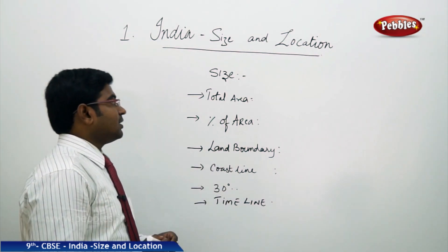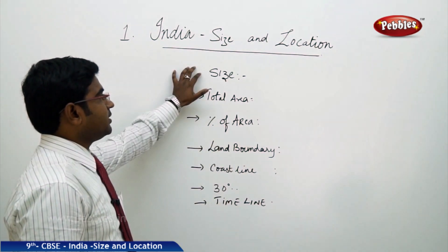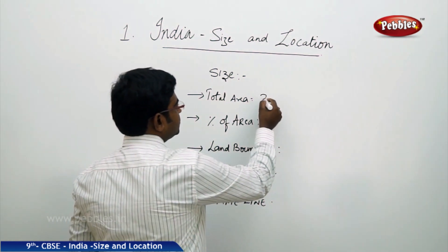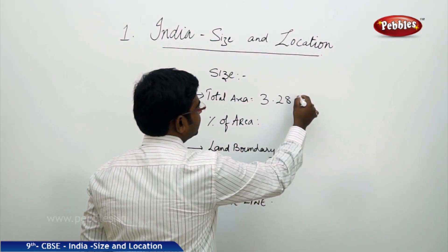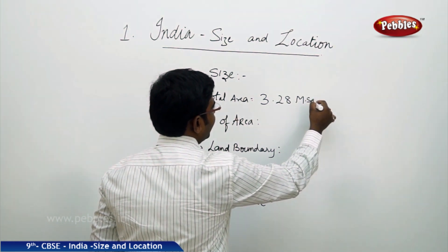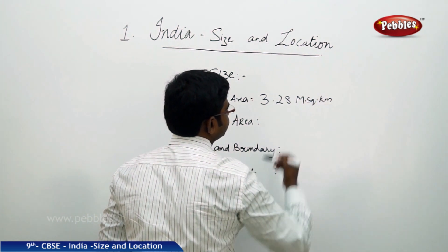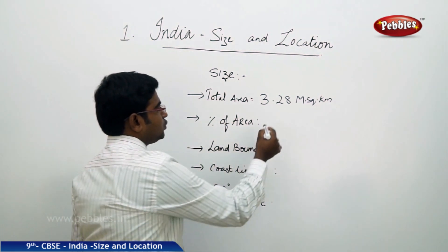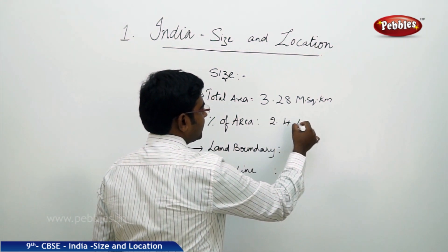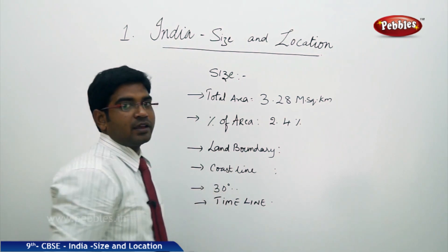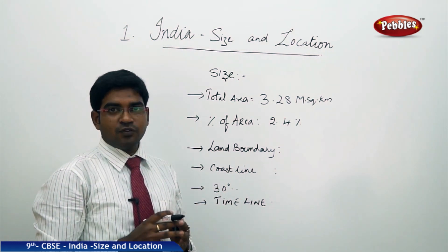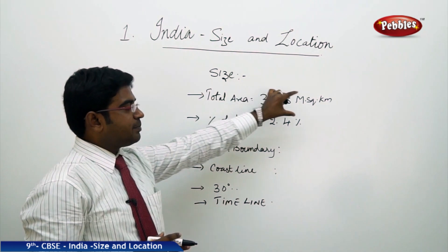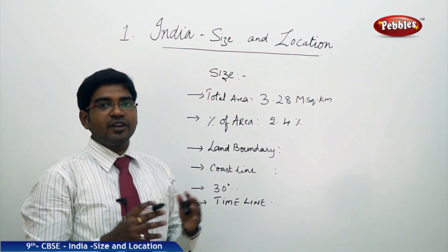Now, let us understand the size of India. The total area of India is 3.28 million square kilometers. This accounts for nearly 2.4% of the entire geographical area of the world. 3.28 million square kilometers is really a very vast land.